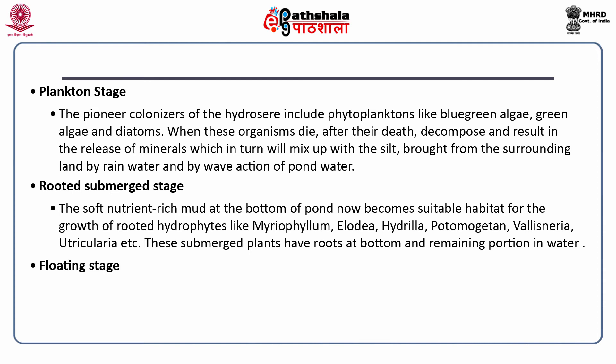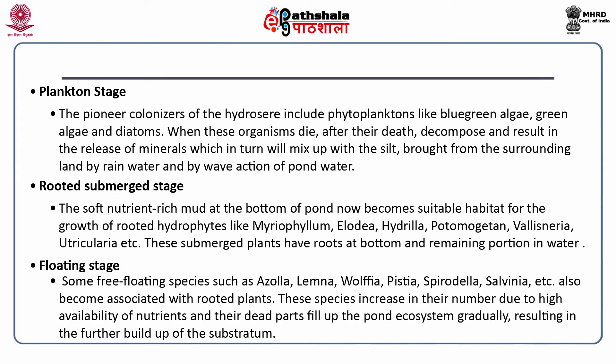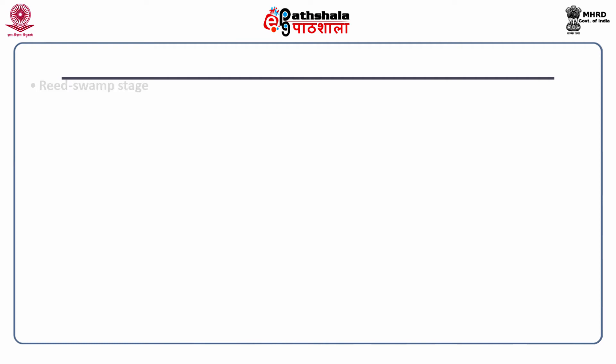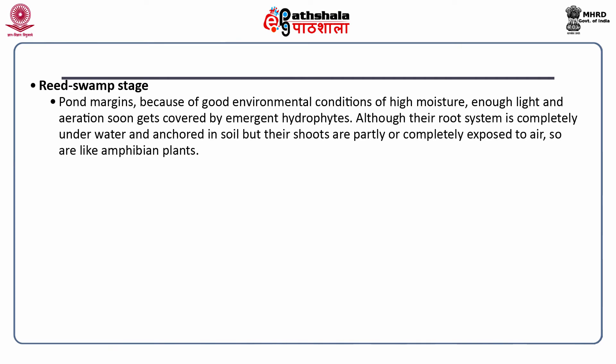The next stage is the floating stage. Some free-floating species such as Azolla, Lemna, Wolffia, Pistia, Spirodela, and Salvinia also become associated with the rooted plants. These species increase in number due to high availability of nutrients, and their dead parts fill up the pond ecosystem gradually, resulting in further build-up of the substratum. The next stage is the reed swamp stage. The pond margins, because of good environmental conditions of high moisture, light and aeration, soon get covered by emergent hydrophytes. Although their root system is completely under water and anchored in soil, their shoots are partially or completely exposed to air, so they are like amphibian plants.